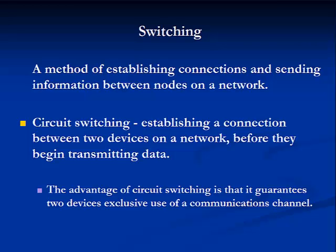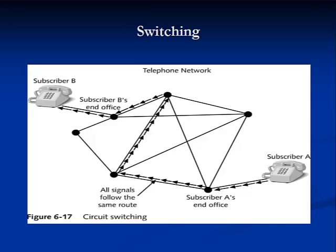Circuit switching establishes a solid connection between two devices on a network before they begin transmitting data, guaranteeing that the two devices have exclusive use of the communication channel. Recall our discussion of the PSTN, or the Old Public Switch Telephone Network.